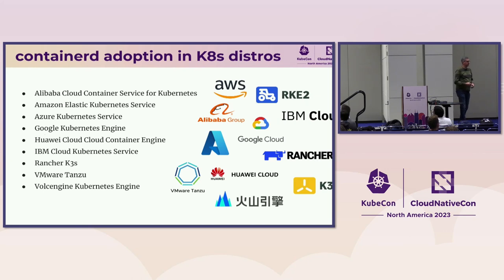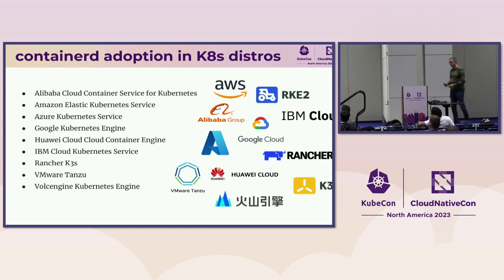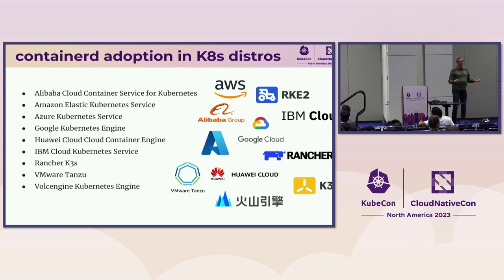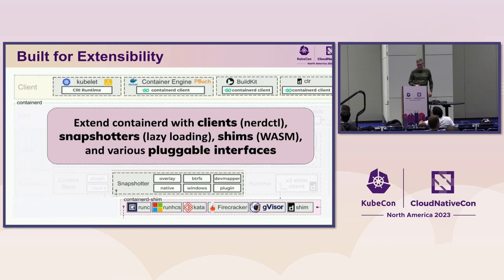One of the ways we see adoption growing is through Kubernetes distributions or managed Kubernetes offerings. Many of these have existed for a while, some are newer adopters, and this is just a representative list. There's always other adoption too — AWS Fargate uses ContainerD, which is not a Kubernetes distribution. You've got Docker's use of ContainerD within Docker Desktop and within the Docker engine. So we continue to see growth in overall project adoption.